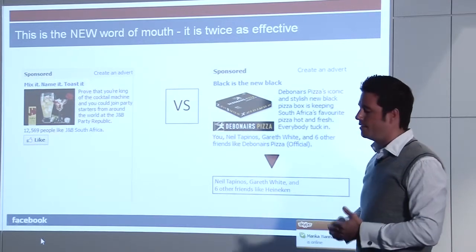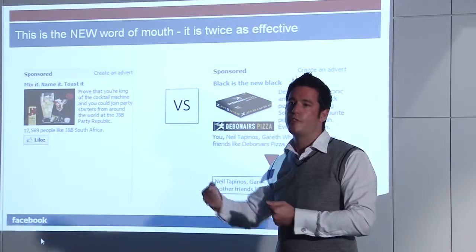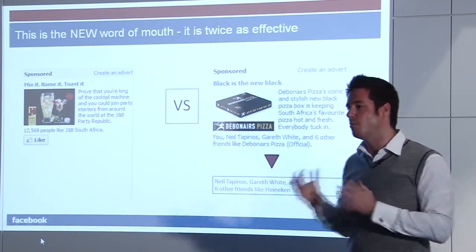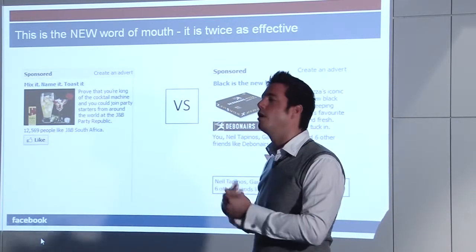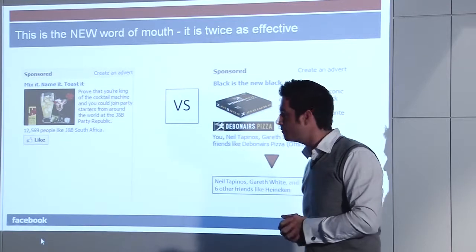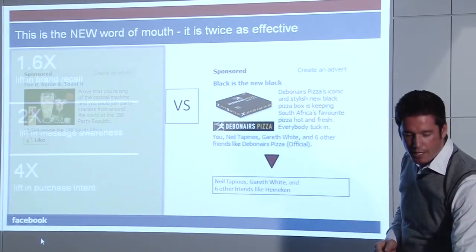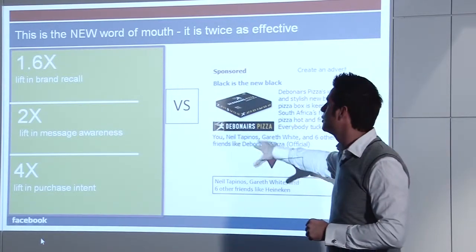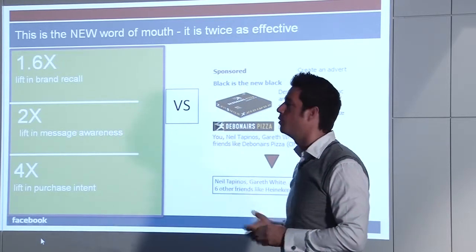What Nielsen does is they run surveys before the start of a media campaign, and then they run surveys at the end. They start with an advertising group, and they select a holdout group to compare the results. They send those users a series of different polling ads and questions. Based on the social recommendations that friends have, they've proven there's a 4x increase in purchase intent for that product, 2x increase in message awareness, and a 1.x increase in brand recall.